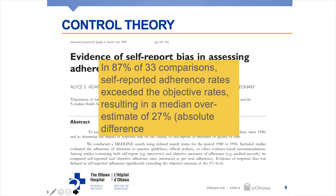Audit and feedback helps address this issue — that we overestimate our performance. And this overestimation is something inherently human. If I asked people on the call who is a below-average driver, we'd all say we're above-average drivers. One of the ways we get through life is by having a better view of ourselves than we probably deserve. So when physicians, nurses, and pharmacists go into their clinical practice, they behave like human beings and overestimate how well they're doing.